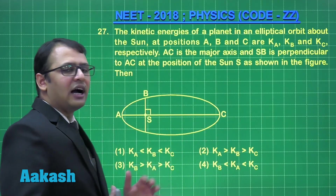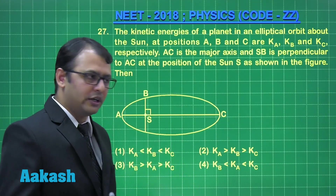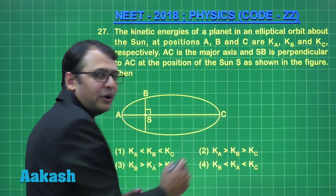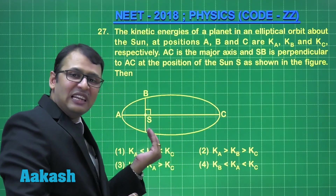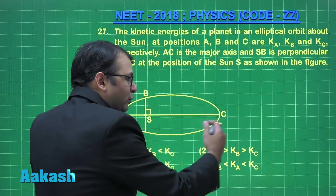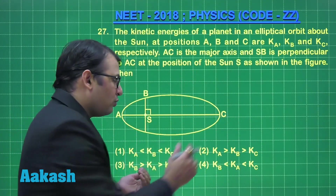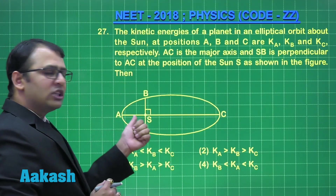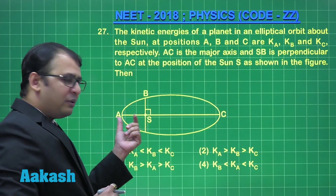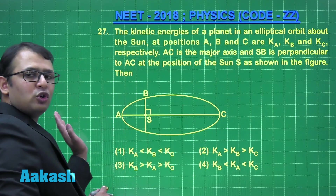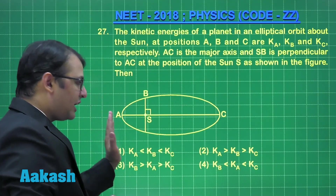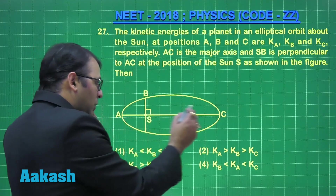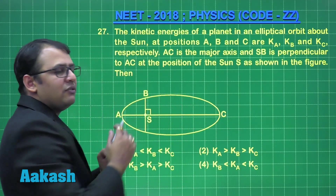A common principle here: if the planet is at the farther point, the force of attraction will be lesser, so centrifugal force will be lesser, and velocity will be less at C. At A, the planet is closest to the Sun, so force of attraction is highest, centrifugal force is highest, and therefore velocity at A should be highest. So highest velocity at A, lowest at C, and B is in between.